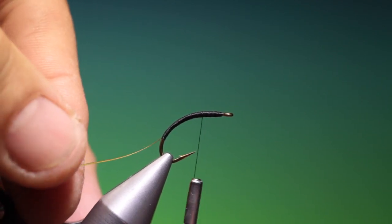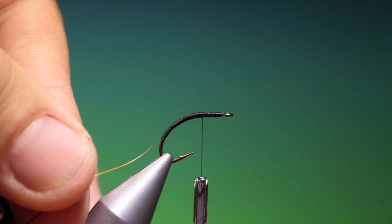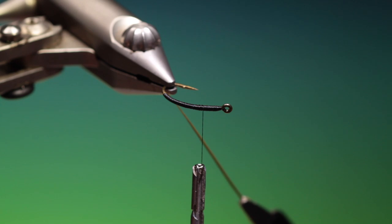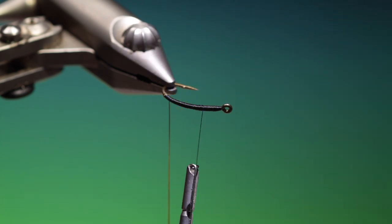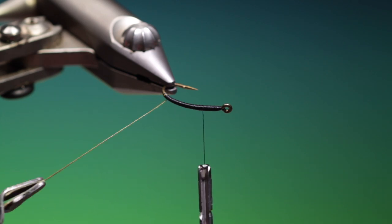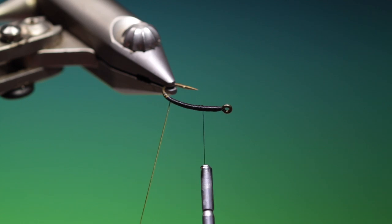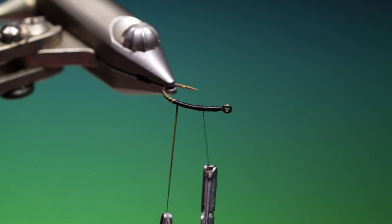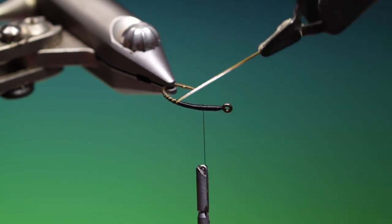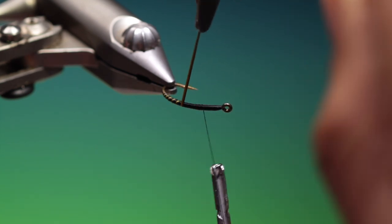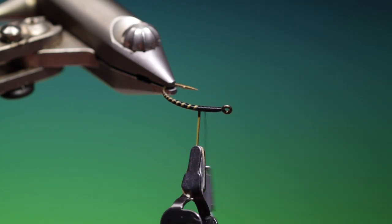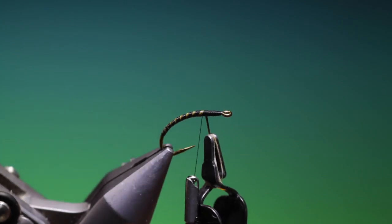I like to turn my hook this way when I'm doing this. We want open turns in between each wrap of quill so the black shines through, and we work our way up into the thorax. Like so, and we can turn that around, that's looking good.